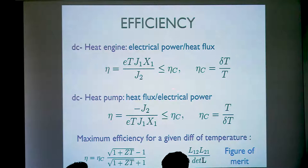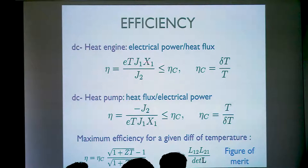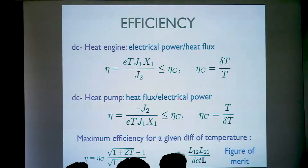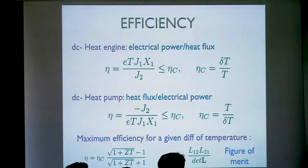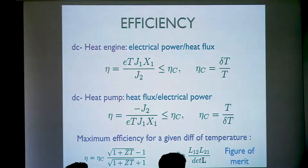We can define efficiencies. The efficiency is always what we want to obtain divided by what we have to invest. In the case of DC heat engines, what we want to obtain is electrical power, and what we have to invest is heat; due to the second principle this has to be smaller than the Carnot efficiency. In the case of a heat pump or refrigerator it is the inverse — we extract heat and we have to invest electrical power — and in this case, in order to satisfy the second principle, this has to be smaller than the Carnot coefficient of performance.